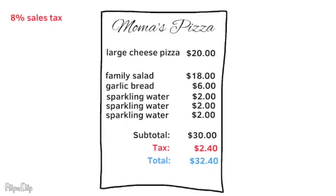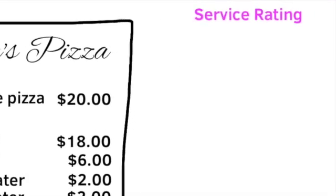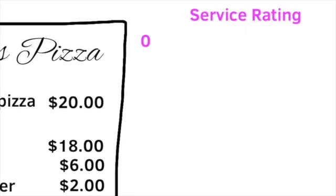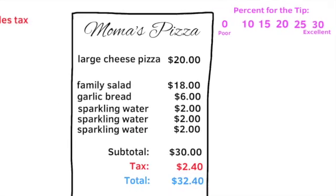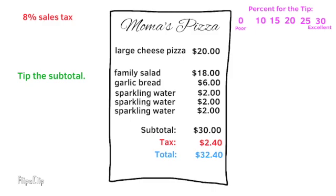Imagine a rating system where you rate the service of the restaurant. The lowest rating would be 0, to represent poor service, and the highest would be 30, representing excellent service. This rating system can represent the percent for the tip and would include 0, 10, 15, 20, 25, and 30. When you calculate a tip, tip the subtotal, not the tax.